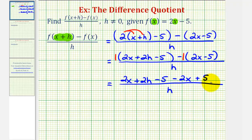Now let's simplify the numerator. We have two x minus two x, that's zero. We also have negative five plus five, that's zero. So this simplifies nicely. So we have two h divided by h, but h over h simplifies to one, so our difference quotient is equal to positive two.